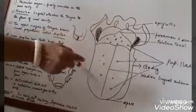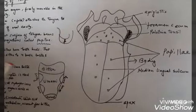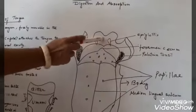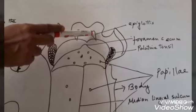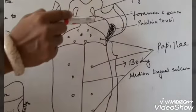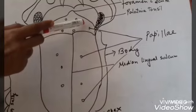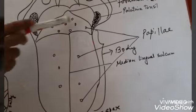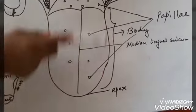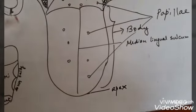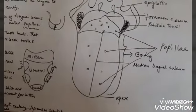I have drawn an anatomical structure of the tongue here. You can see the epiglottis — it covers the respiratory tract or windpipe during swallowing of food. This is the foramen cecum, these are the palatine tonsils in our throat, and these are papillae of various types scattered throughout the tongue. This is the body of the tongue and this is the apex.